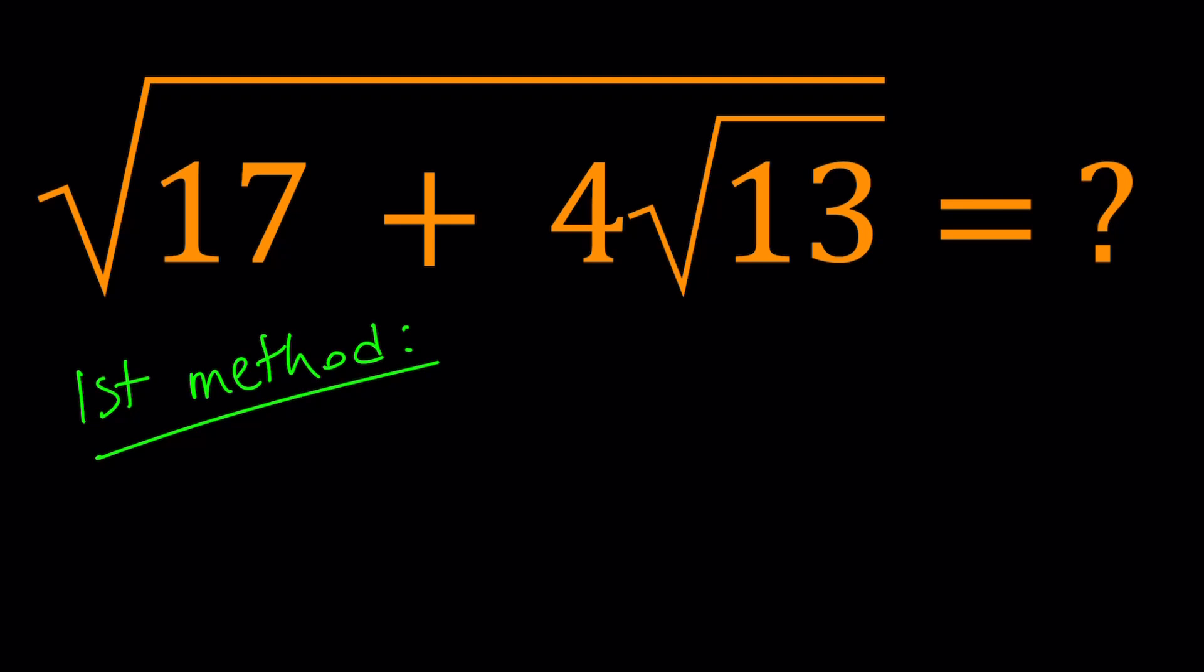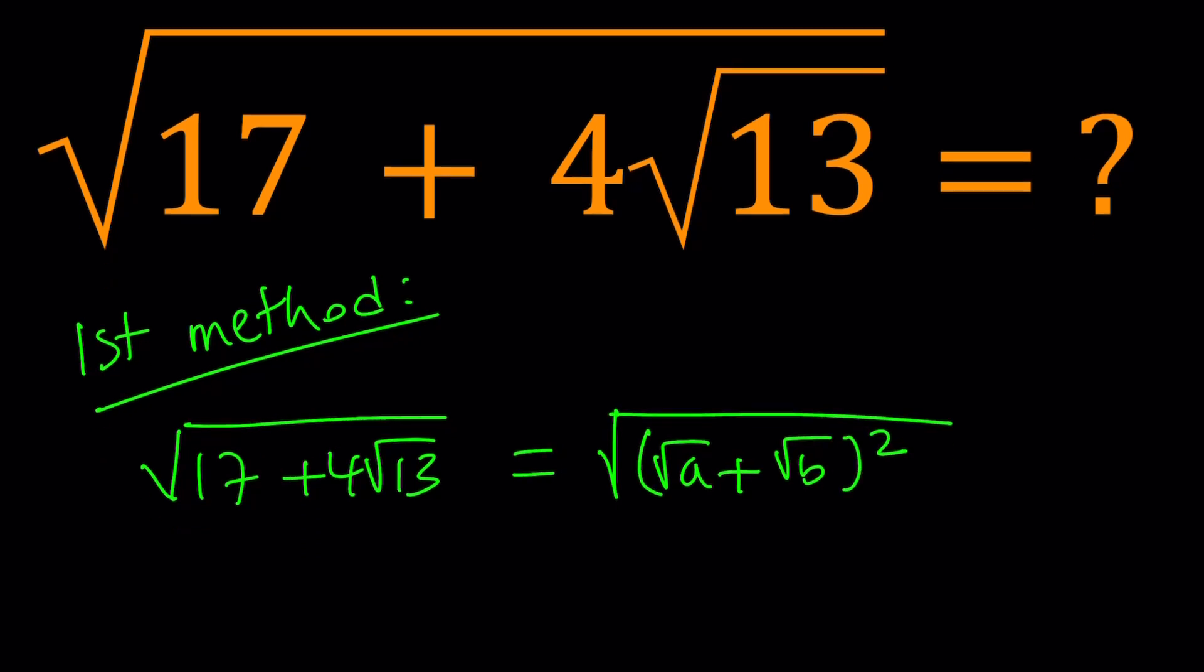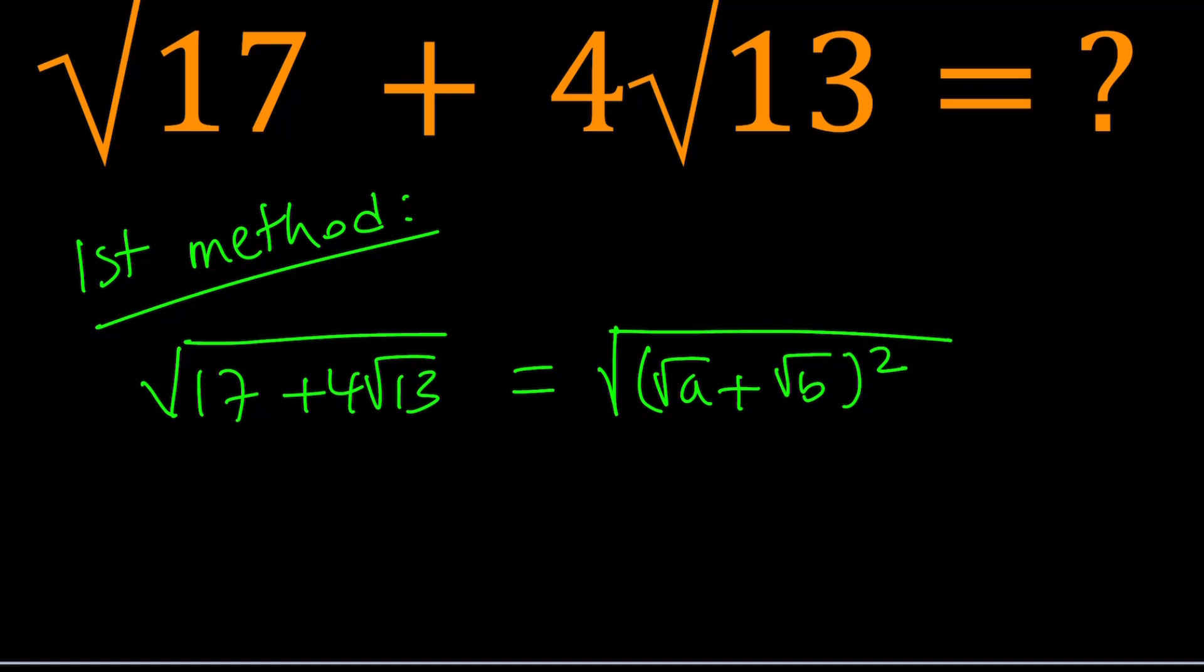I'm going to write this expression. I want this to be, in other words, the square root of a plus the square root of b squared. Make sense? So how does that work? If a and b are positive, square root of a and square root of b are real numbers and positive, their sum is positive. So when I take the square root, it's going to be a positive expression or just a sum.